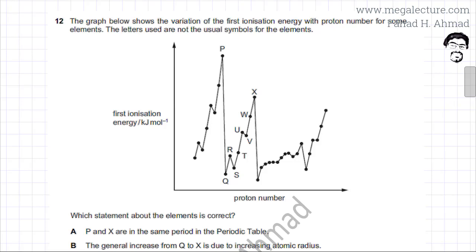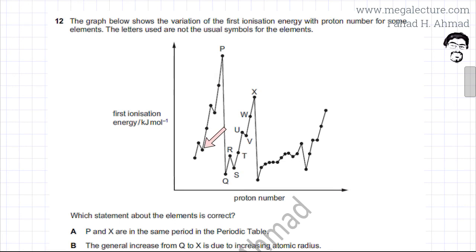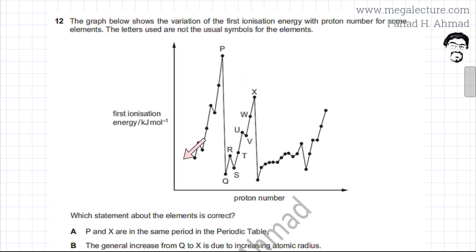The question shows a graph of the variation of first ionization energy with proton number for some elements, where the letters used are not the usual symbols. According to consecutive proton numbers, the ionization energies are plotted and you can notice the trend: whenever you move across a period, there is a general increase in ionization energy, except for dips at group 3 and group 6. This indicates one period.